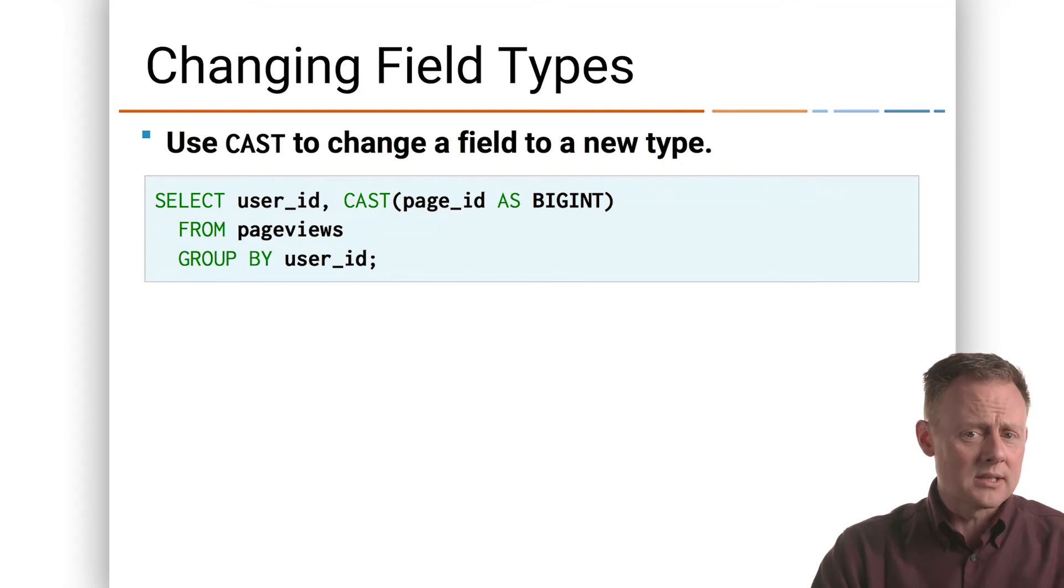But I want it to behave as a big int, so I can select page ID and cast it to a big int, and now in that new stream I'm creating, it's going to be a big int. Of course, this, as shown, is a non-persistent query.